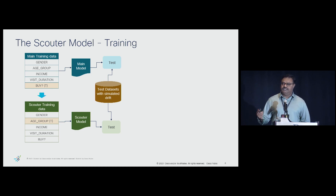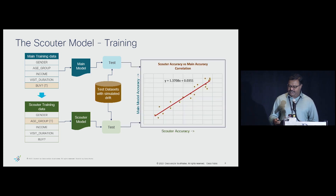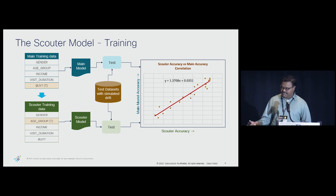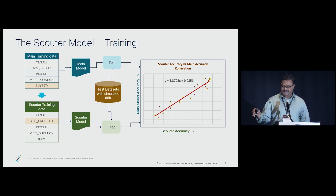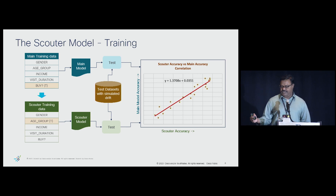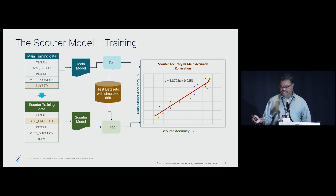As drift in the data sets increases, both the main model and Scouter model's accuracy deteriorate. We establish a relationship between the Scouter model's accuracy and the main model's accuracy — each dot on the graph represents a data set. As the main model's accuracy decreases, the Scouter's accuracy also decreases. From this, we create a linear regression equation — y = ax + b — so that given the Scouter model's accuracy (x), we can compute the main model's accuracy (y).